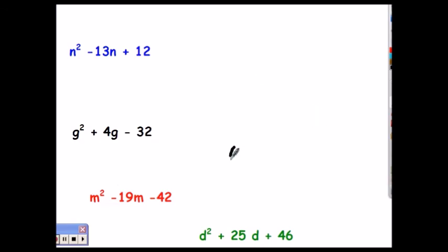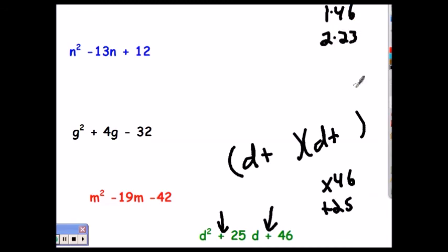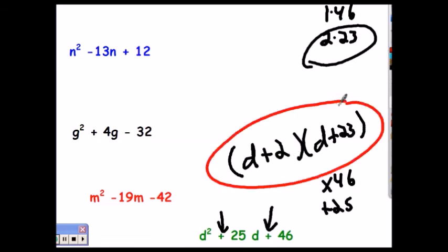For the last one, the plus sign here tells me same signs, and the plus in the middle tells me same plus. I'm looking for two numbers that multiply to 46 and add up to 25. 1×46 — no. 2×23 — winner! And we are done. Our next lesson we're going to look at problems that have coefficients out front. It makes it a little bit more complicated, but we can handle it. See you later.